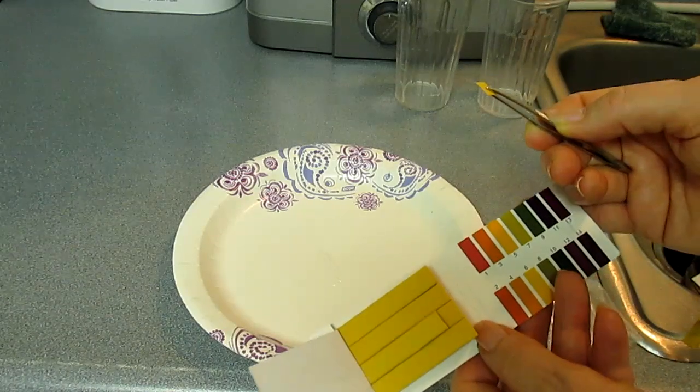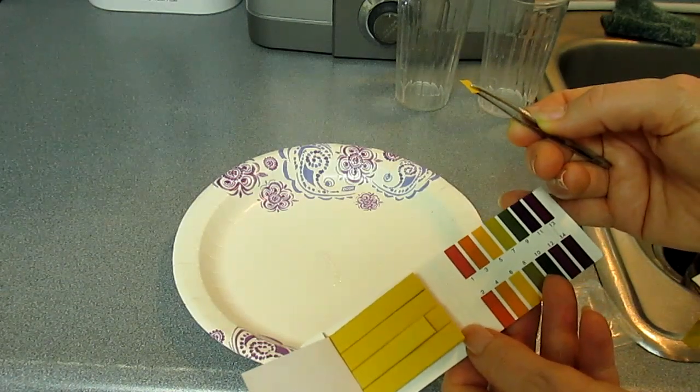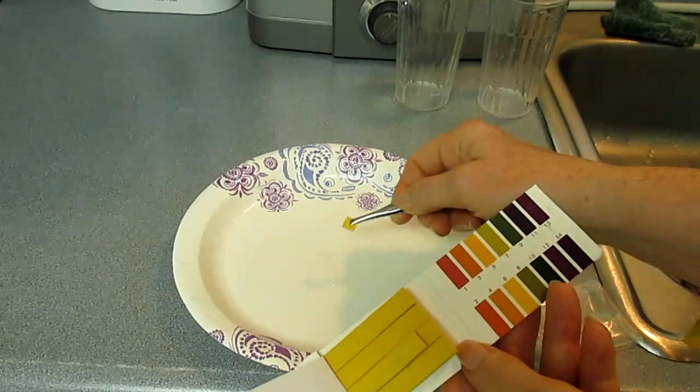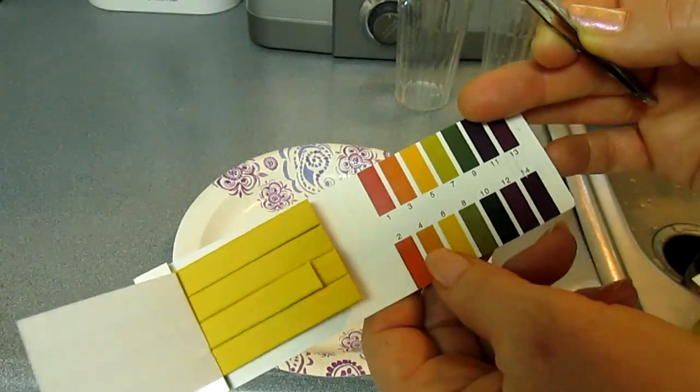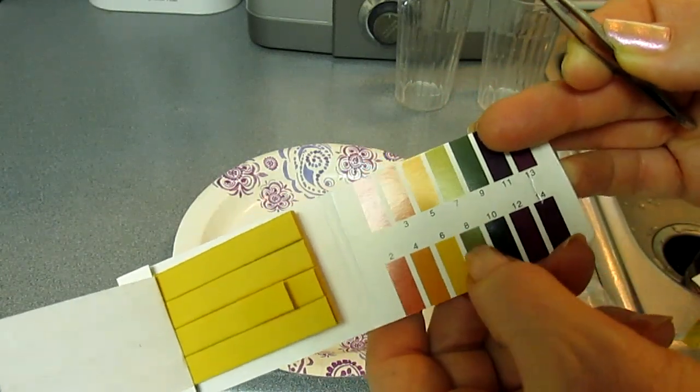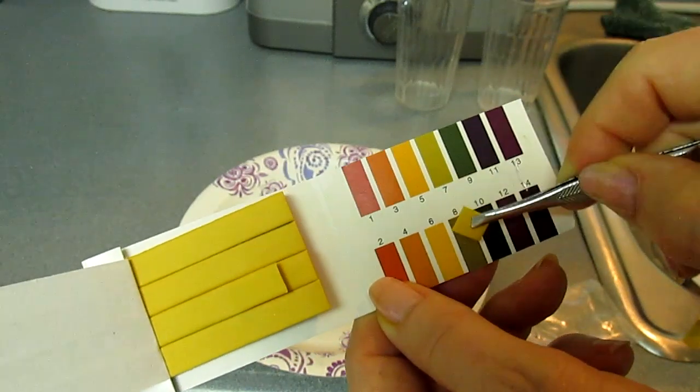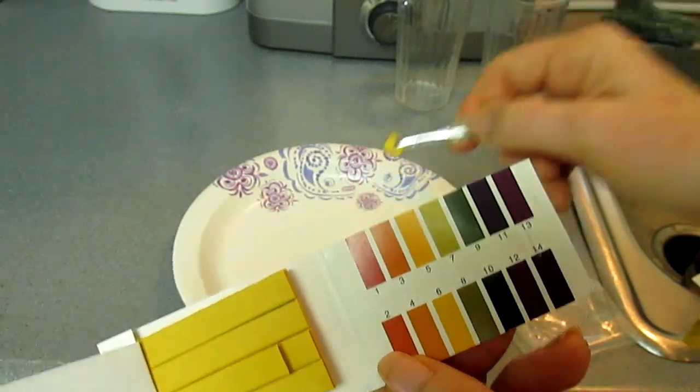Our saliva should be between 7 and 8 pH, actually about 7.3 pH. This kit will show you 7 as that color and 8 as that color, so you're looking for a color that's in between those two colors.